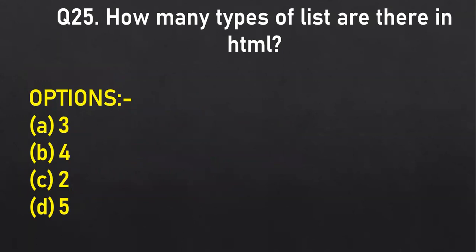How many types of list are there in HTML? A option — three. Anyone with view four? An ordered list, an unordered list, and a definition list. Nested list is not a type of list. So the correct answer is three. Online class, the revision is clear — I hope you all liked the quiz.